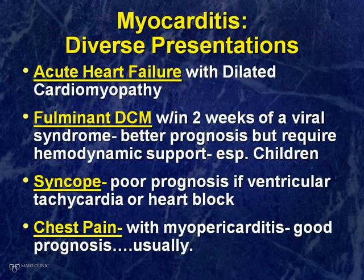There are four common ways that myocarditis presents. The first and most common is with acute heart failure, which is a syndrome where you feel short of breath with walking, sometimes with ankle swelling, excessive fatigue, and that is often associated with an enlarged heart that doesn't pump well — called dilated cardiomyopathy, meaning disease of the heart muscle. The second most common form is fulminant dilated cardiomyopathy, which is very similar except that it occurs within two weeks of a virus-type syndrome — an upper respiratory tract illness or maybe a nausea, vomiting, fever, and chill-type illness — and that syndrome is more common in children than in adults.